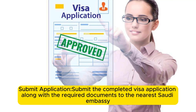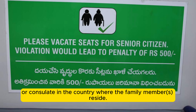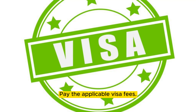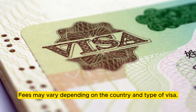Submit the completed visa application along with the required documents to the nearest Saudi embassy or consulate in the country where the family members reside. Pay the applicable visa fees, which may vary depending on the country and type of visa.